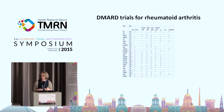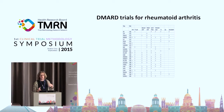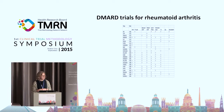Outcome reporting bias is analogous to publication bias, which is typically where you don't publish the entire study. So the message is: what you're reading in the literature, whilst it's in the literature, may not actually be the whole story.